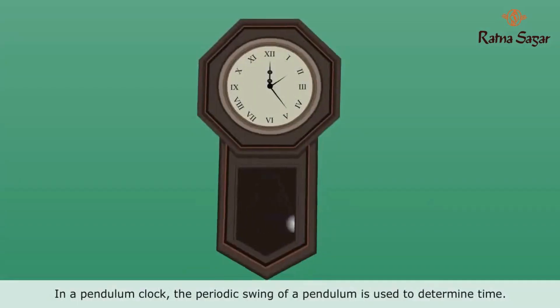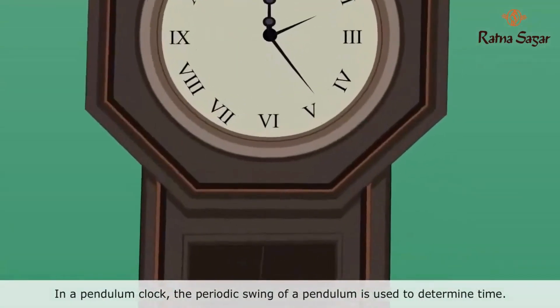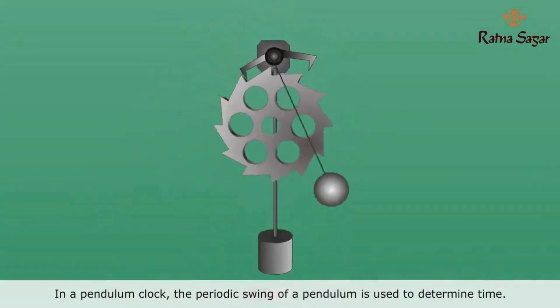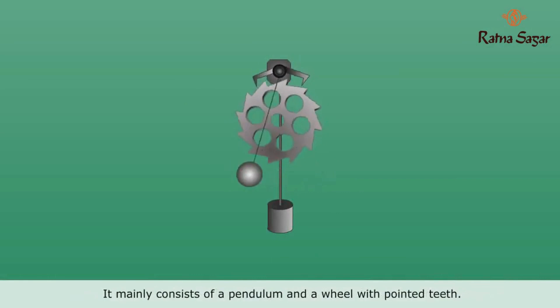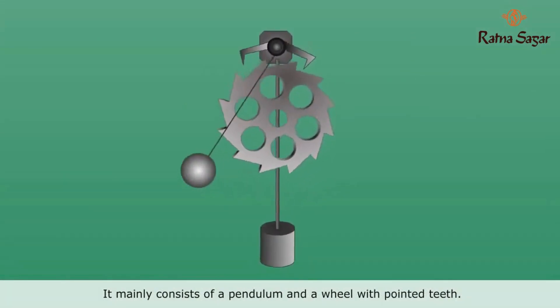In a pendulum clock, the periodic swing of a pendulum is used to determine time. It mainly consists of a pendulum and a wheel with pointed teeth.